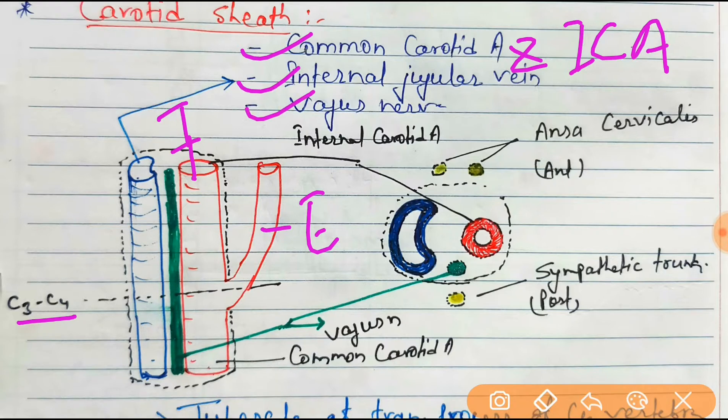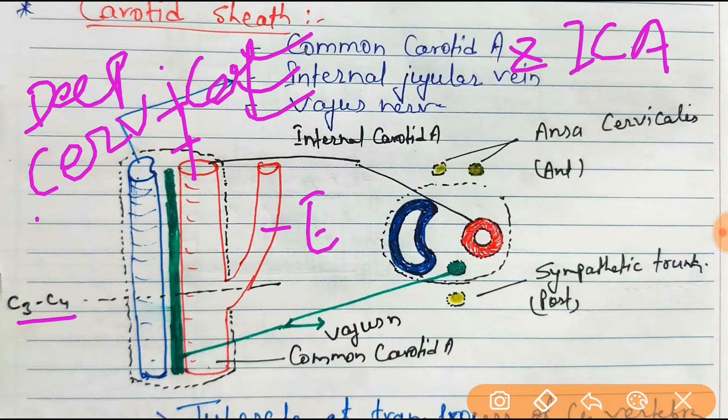Then after internal jugular vein, vagus nerve, and one thing is missing is deep cervical lymph node. So you have to remember four things: first common carotid artery and internal carotid artery, then internal jugular vein, then vagus nerve, then deep cervical lymph node as contents of the carotid sheath.